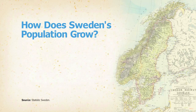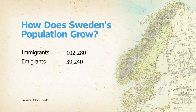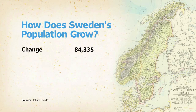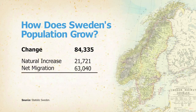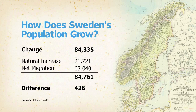So let's look at the rest of growth. We said Sweden grew by about 84,000, and 21-some thousand was due to natural increase. So there's a third culprit in there somewhere, and of course that's migration. During 2009, there were 102,280 immigrants who came to Sweden to live. 39,240 people left to go live someplace else. So that gives us a net migration of 63,040. Sweden grew by 84,000-some, natural increase was 21,721, and net migration was 63,040. Those things don't quite add up — they missed by about 426 — which is actually pretty good. But it does serve to illustrate that even a country with really good statistics, things might not quite add.